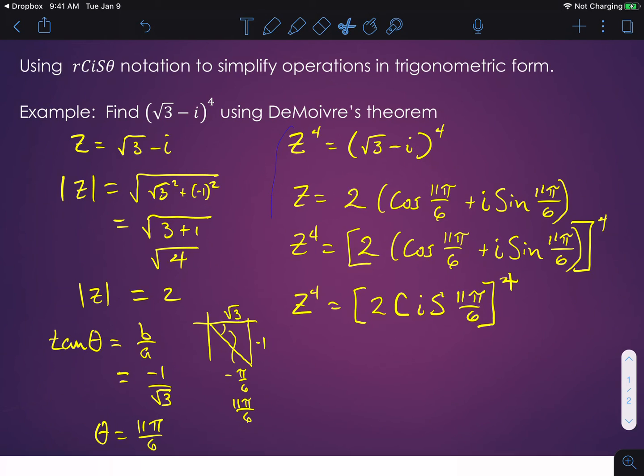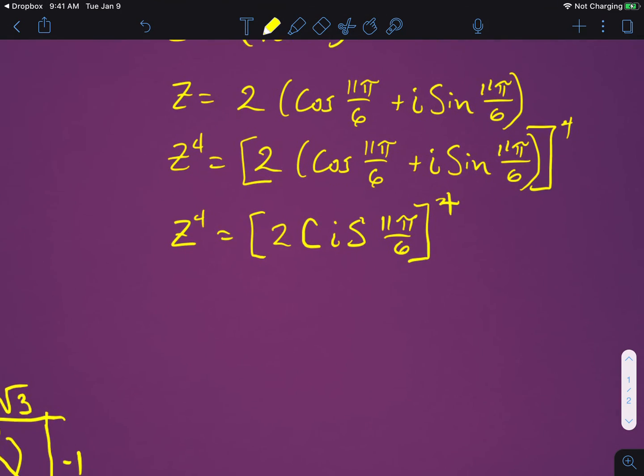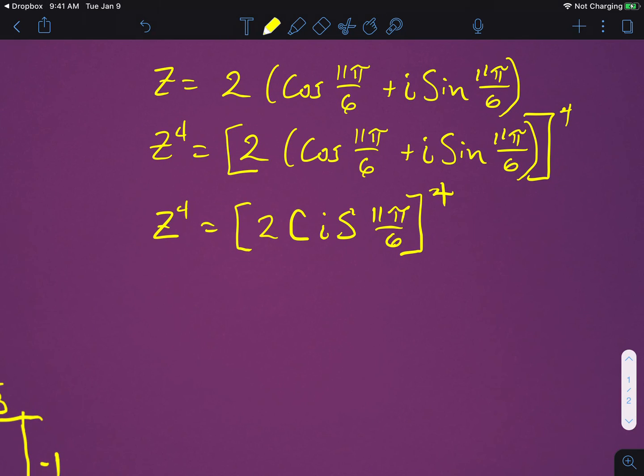We're able to take this expression and rewrite it now this way. z to the fourth now becomes 2 to the fourth, which is 16, cis, and we're going to say 11π/6 times 4. But 4 cancels the 6 and turns that into 22π/3.